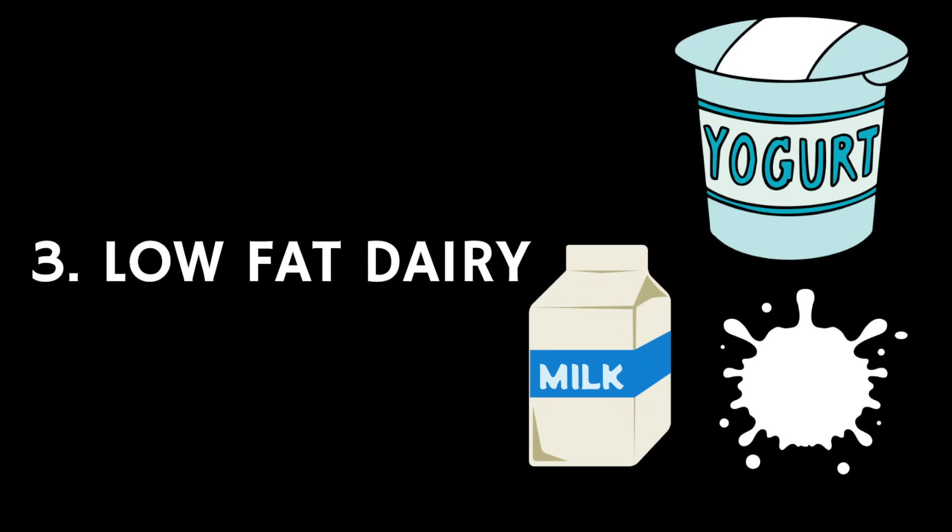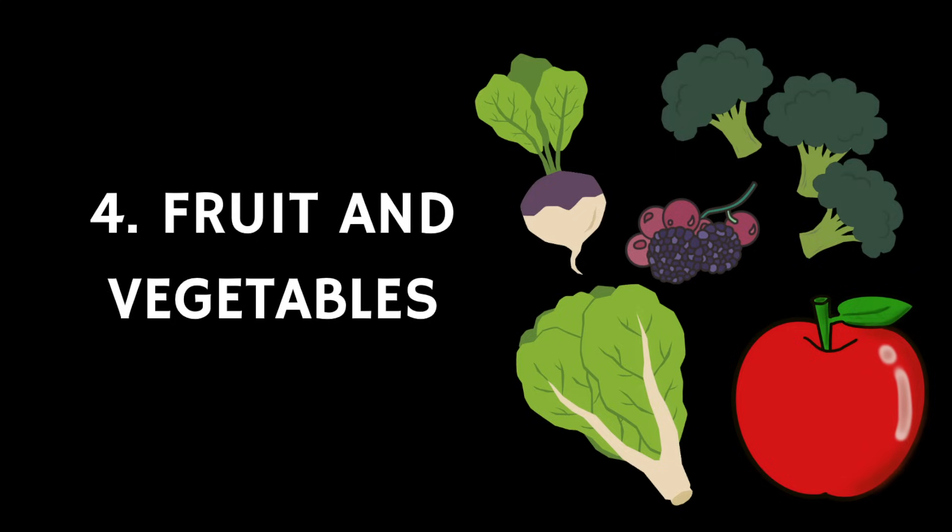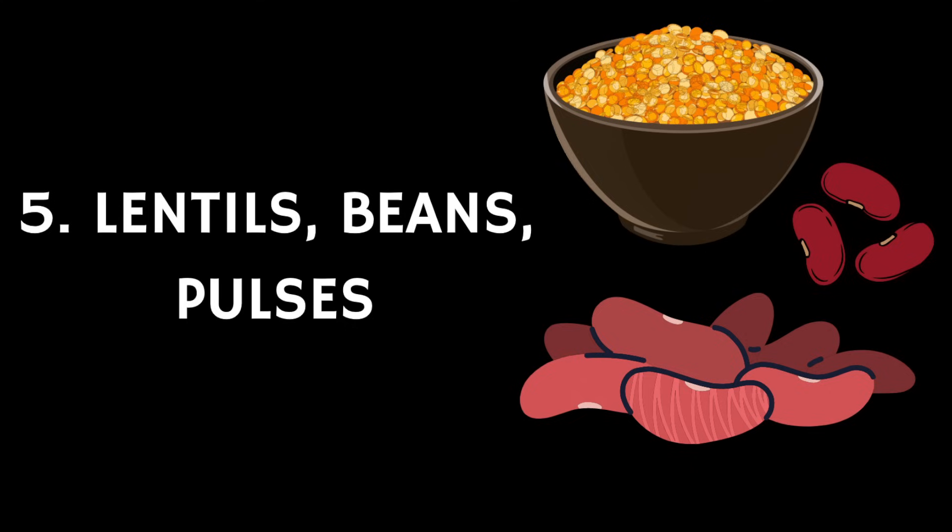Oily fish are full of omega-3 fatty acids, which are important for brain and heart health. The third food group is dairy products, a rich source of calcium important for bone health — choose low-fat varieties like skimmed milk and low-fat Greek yogurt. Fourth are fruits and vegetables, providing vitamins, minerals, and fiber. Finally, lentils, beans, and pulses are good because they're low in fat and an important source of protein, fiber, vitamins, and minerals.